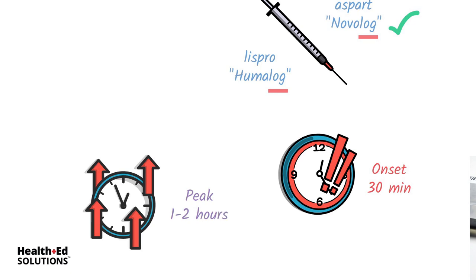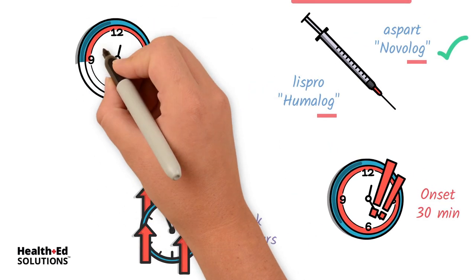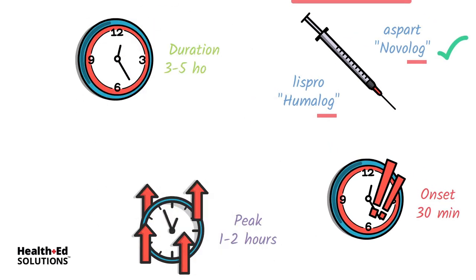So if you give this rapid acting insulin — that's why it's called rapid acting — it is peaking within two hours, packing its full punch. And then within about four hours it's out of the patient's system. The rapid acting is in and out within four to five hours.